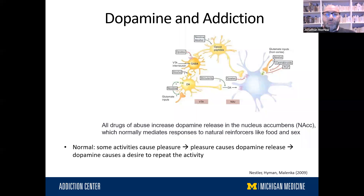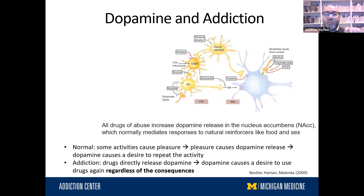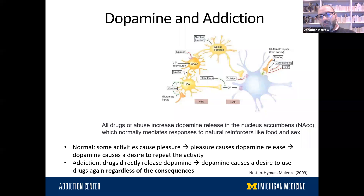With drugs of abuse, this becomes pathological because the drugs directly release dopamine. So that desire to use is going to be there regardless of the consequences of that drug use, whether it reached whatever goal you had or not — it's still going to release dopamine and you're still going to want to do it again. People think of dopamine as a pleasure molecule, but it's much more of a motivational molecule; pleasure is actually mediated a bit differently. So that's very basically what these drugs do — they increase dopamine in the accumbens.